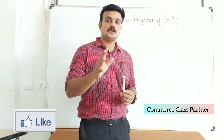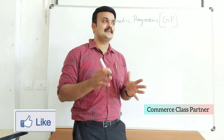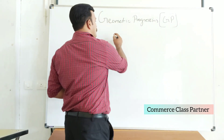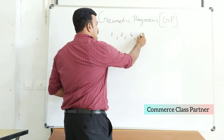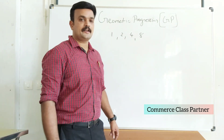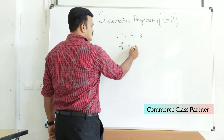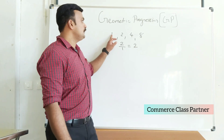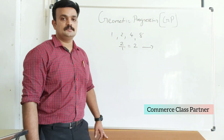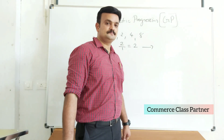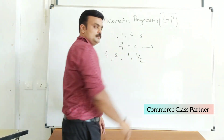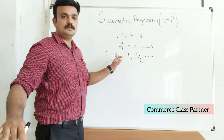Coming back to Geometric Progression: a GP series may be either an increasing GP or a decreasing GP. For example, the sequence 1, 2, 4, 8 is an example of an increasing GP. There may be a decreasing GP also — for example, 4, 2, 1, 1/2, and so on. This is an example of a decreasing GP.